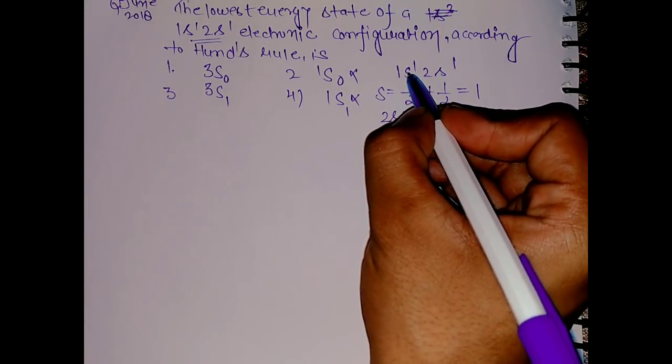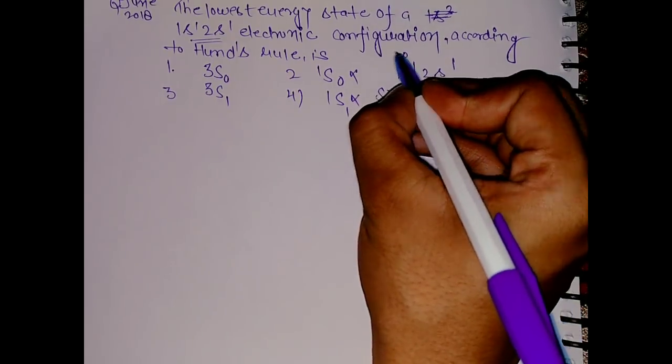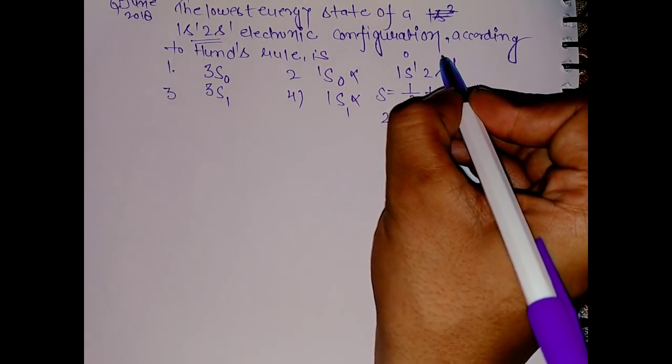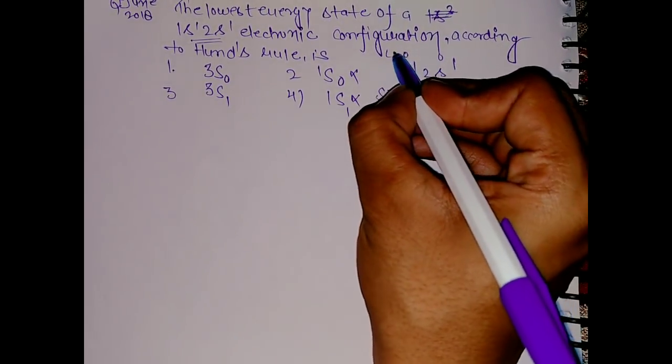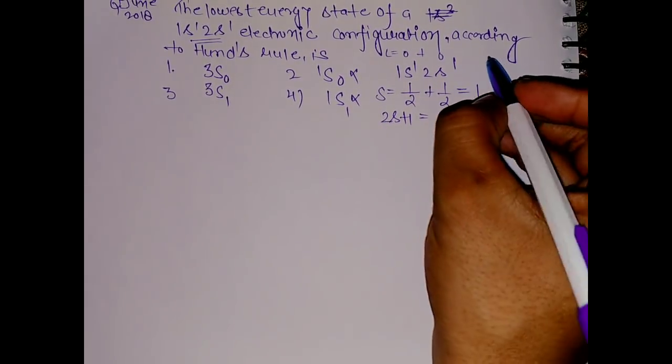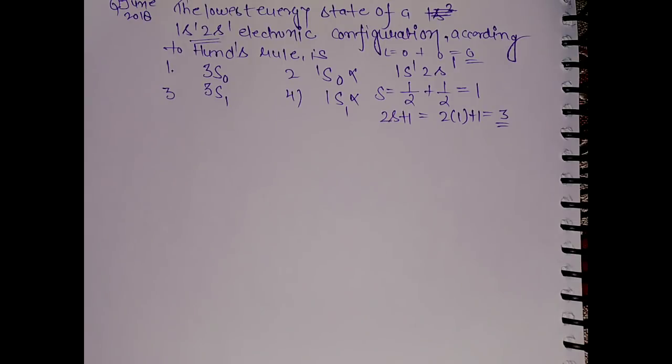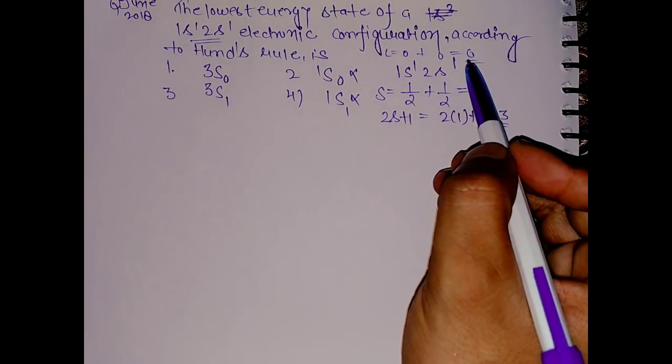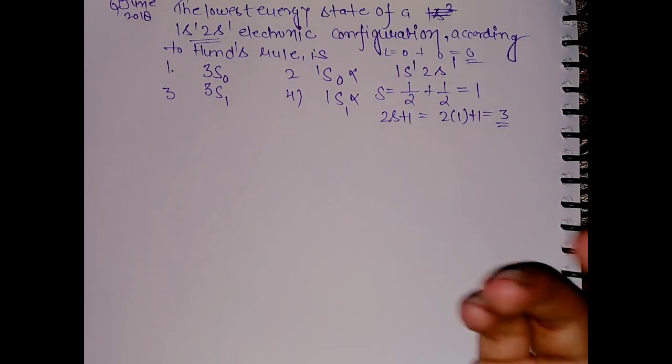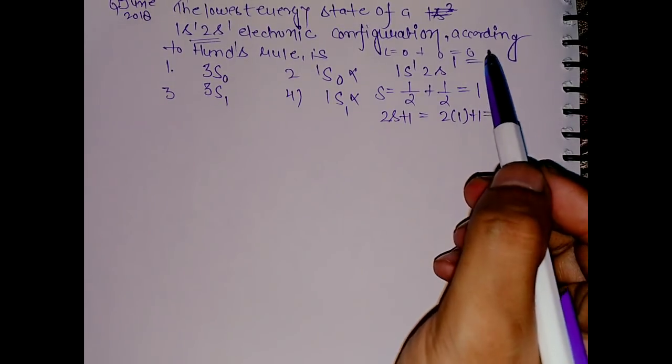Now come to the L value. Since for s we have L value equals 0, and same goes for the other s orbital, total L equals 0+0 equals 0. So we have s here. The term will be s, for 0 we have s, for 1 we have p, and for 2 we have d.